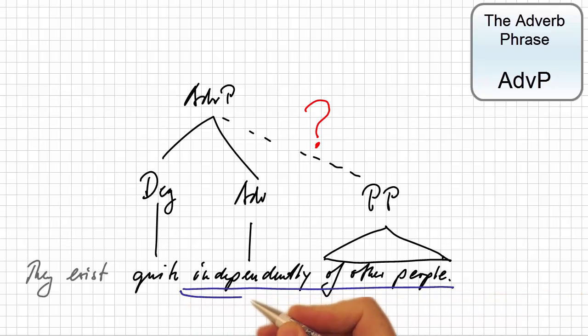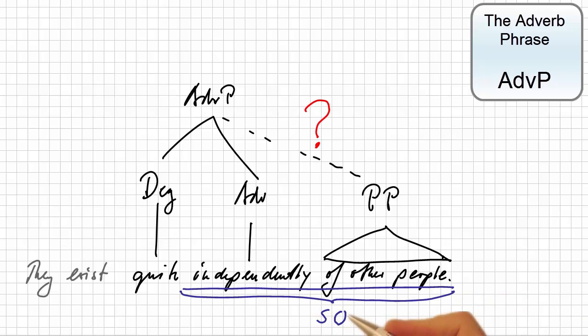If we apply the proform test, we see that we can replace the whole construction independently of other people by so.